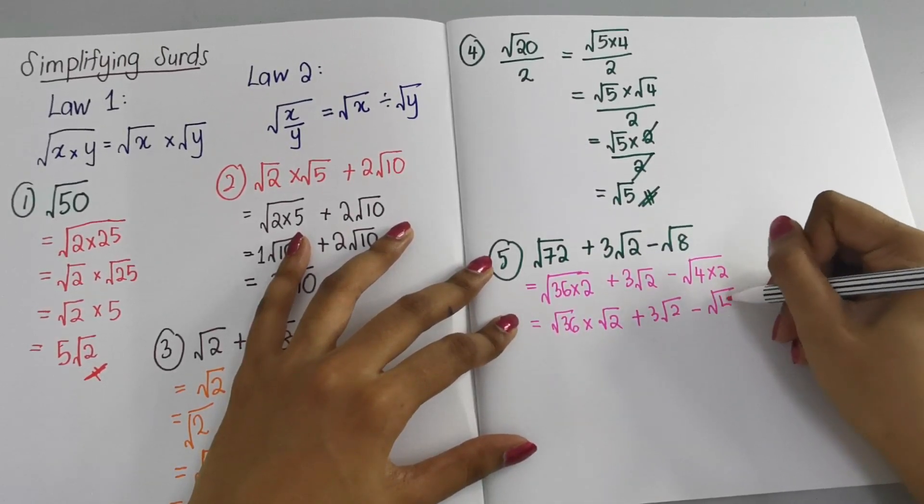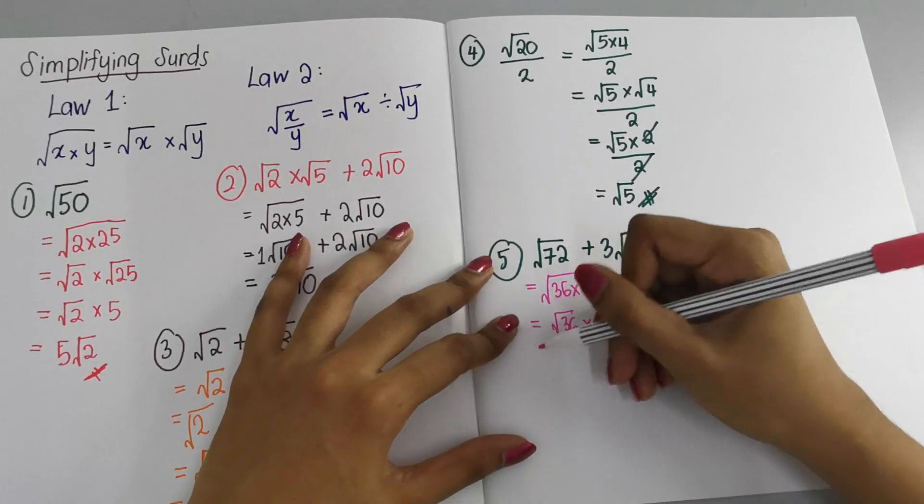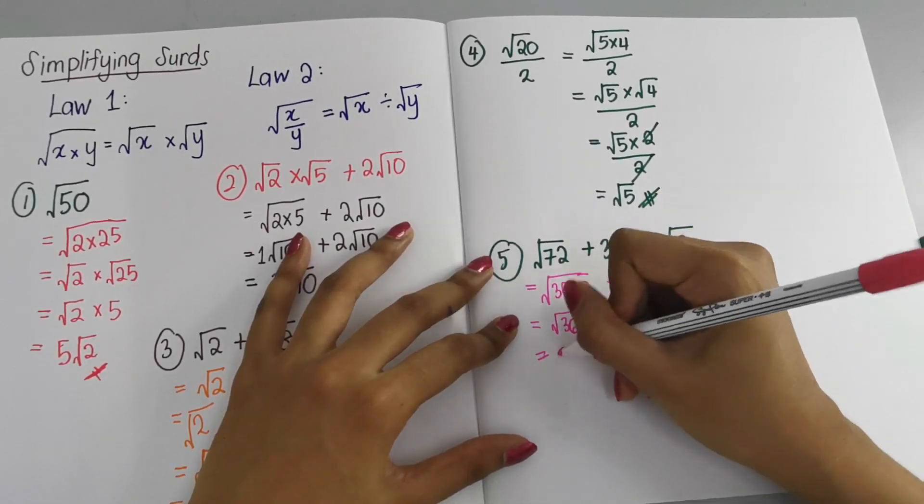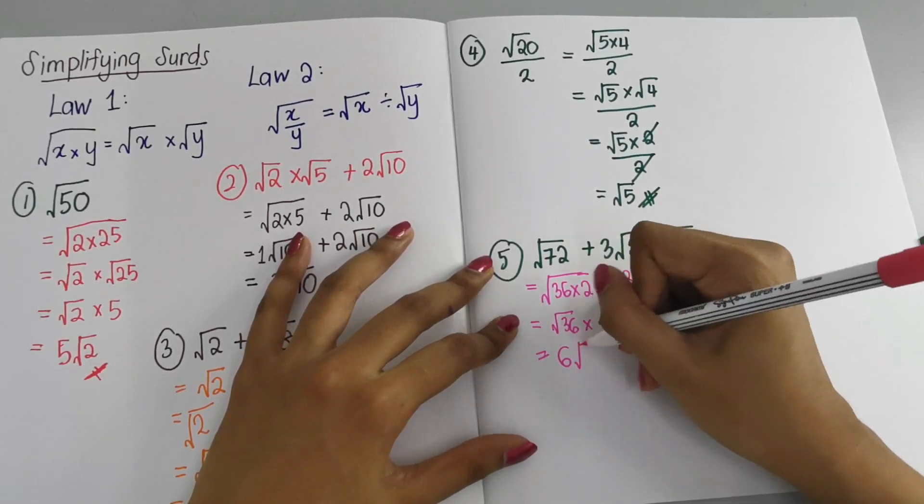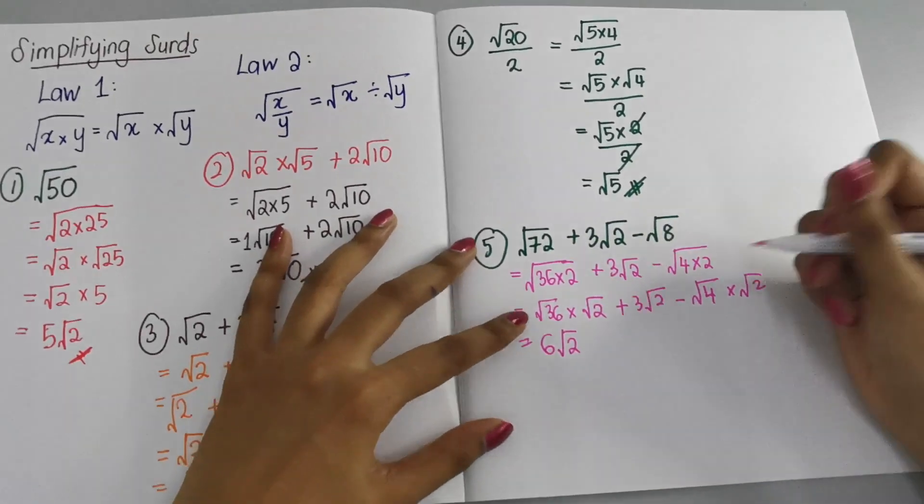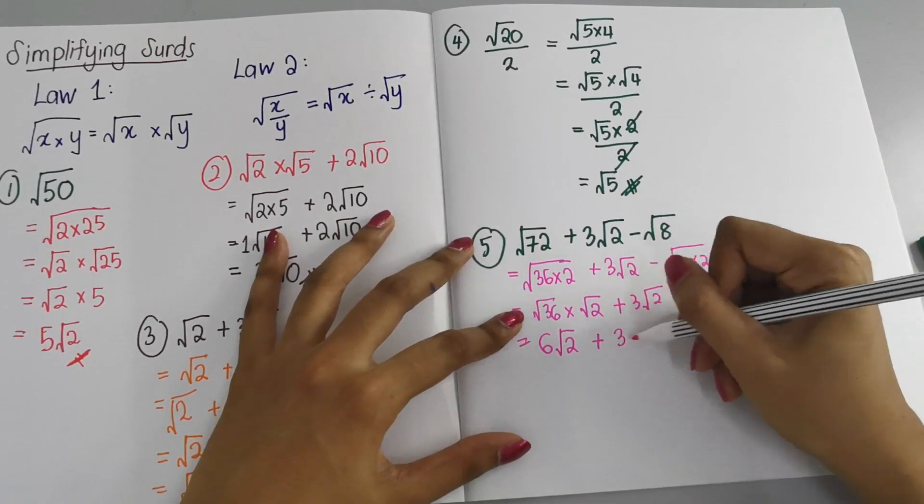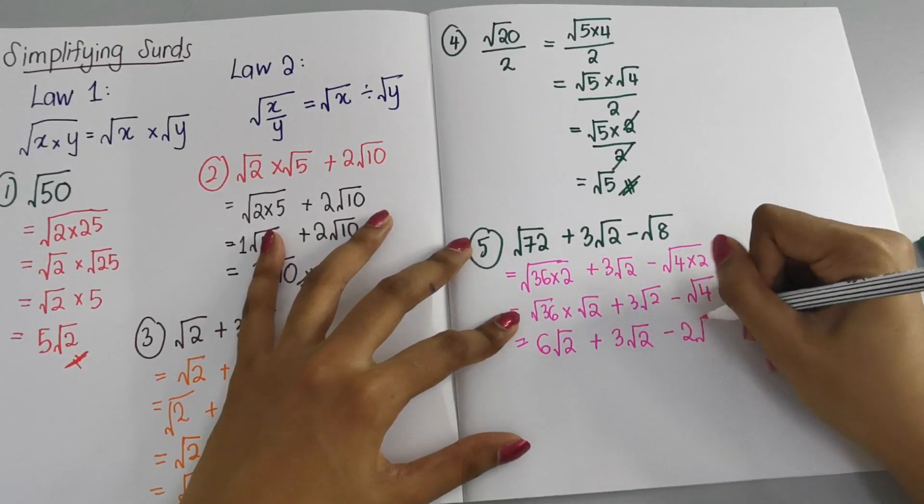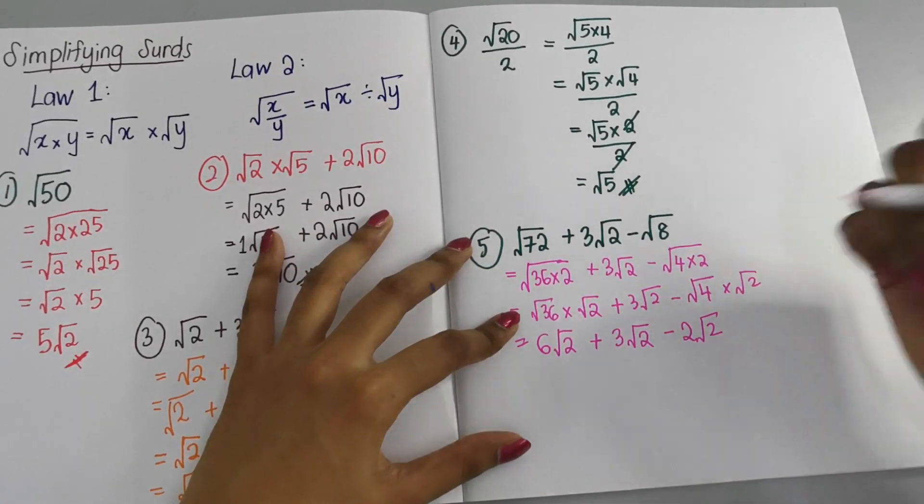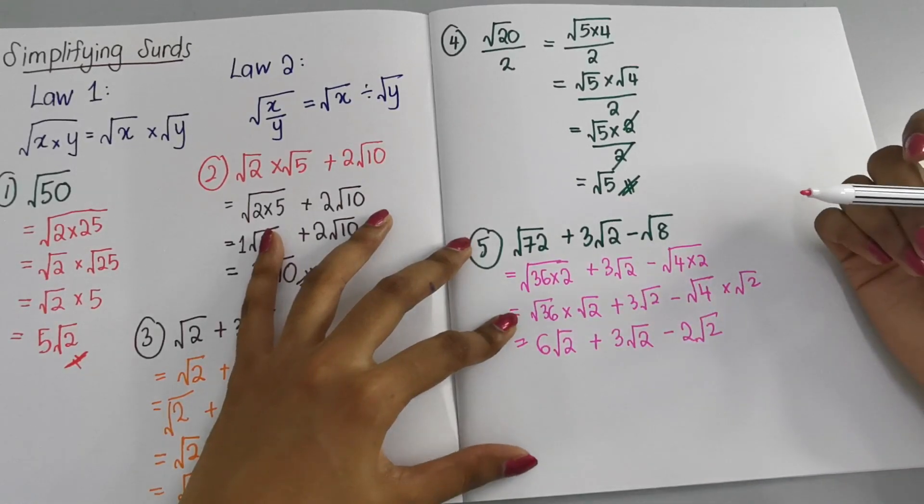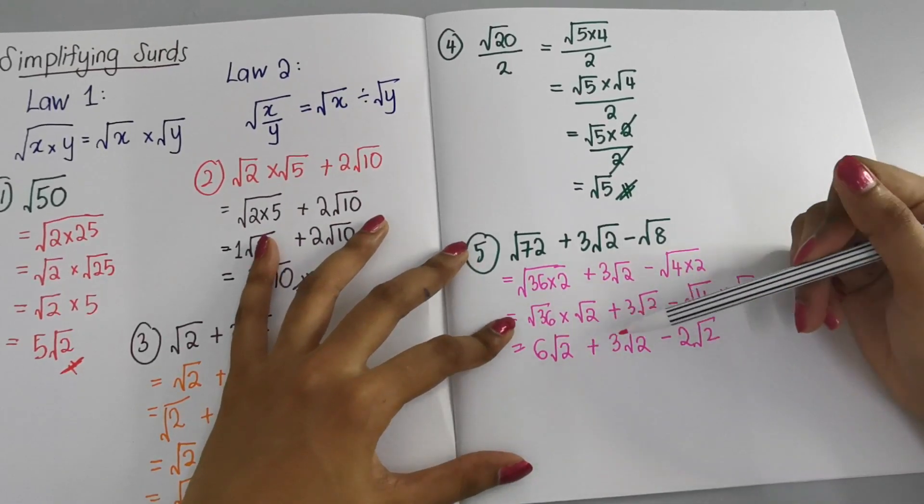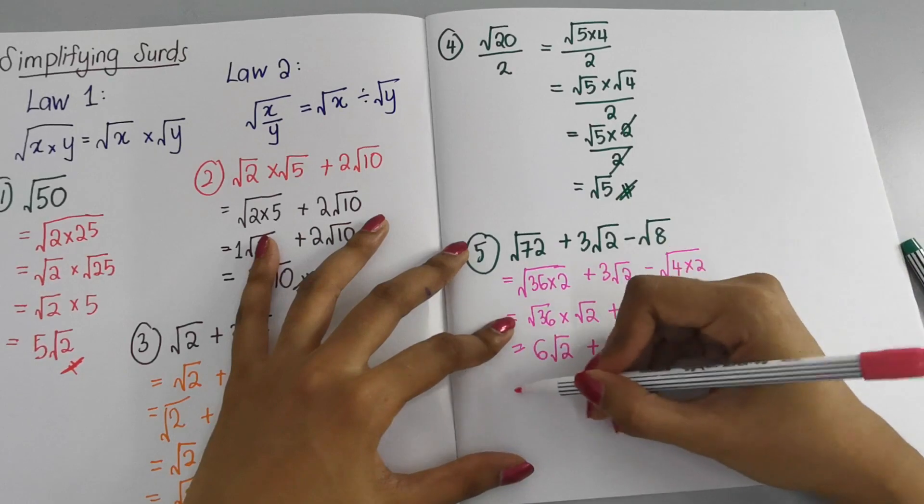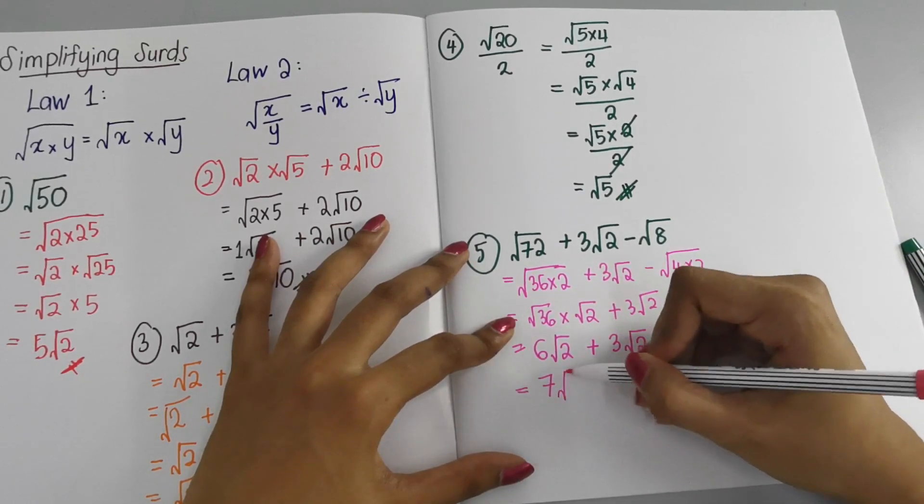√36 is 6, so 6√2 + 3√2 - 2√2. Everything has √2, so we just take the numbers and add and subtract: 6 + 3 = 9, 9 - 2 = 7. So the answer is 7√2.